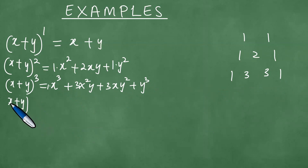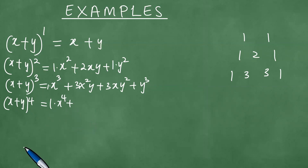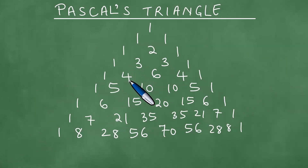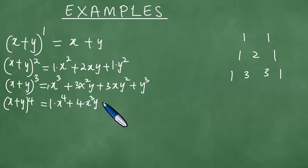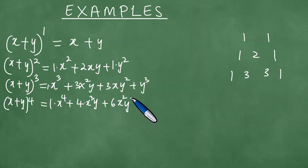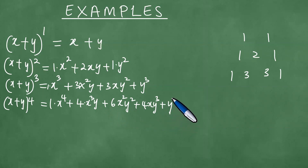Let's do x plus y to the fourth power. Below the row 1, 3, 3, 1 we have 1, 4, 6, 4, 1. So the expansion is 1 times x to the fourth, plus 4x cubed y, plus 6x squared y squared, plus 4xy cubed, plus 1 times y to the fourth.